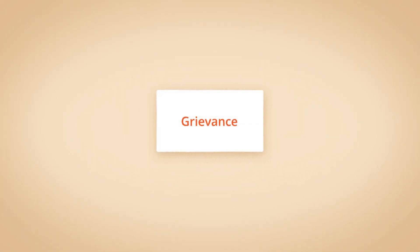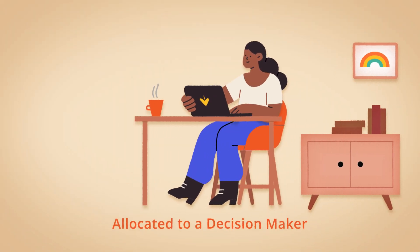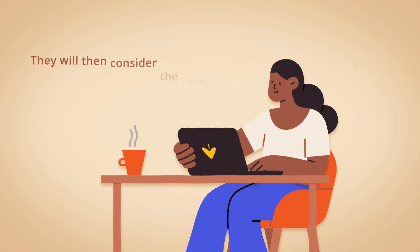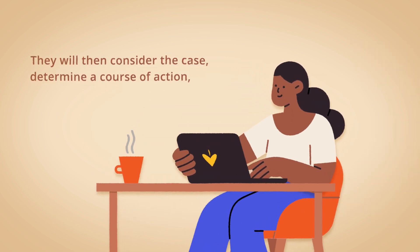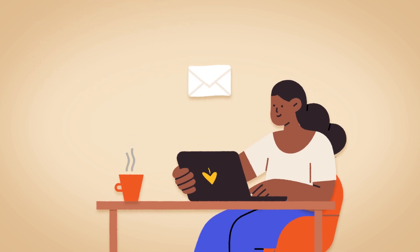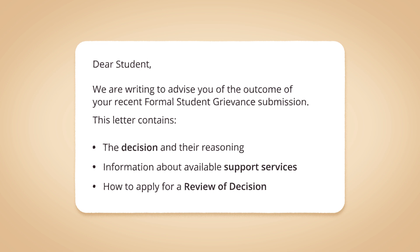When your grievance is lodged, it will be reviewed and then allocated to a decision maker. They will then consider the case, determine a course of action, and ultimately send you a written response that explains the decision they've made and their reasoning, information about available support services, and instructions on how to apply for a review of the decision if you are still dissatisfied.